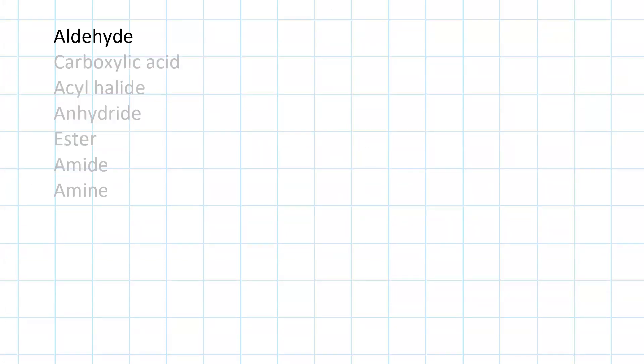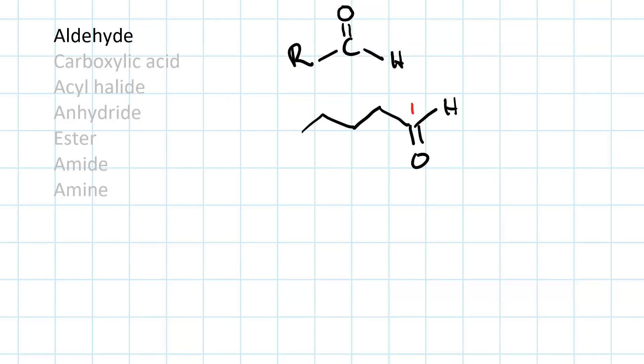An aldehyde contains a terminal carbonyl, so you've got your R group to your carbonyl to a hydrogen. So our example here is pentanal. And if we wanted to draw the condensed structure, there it is.